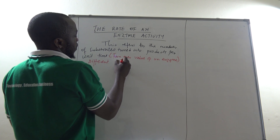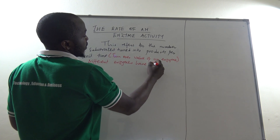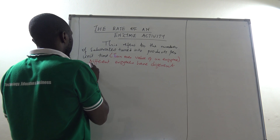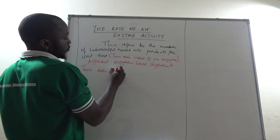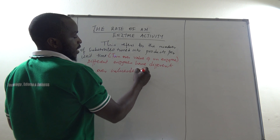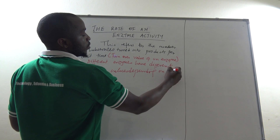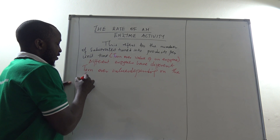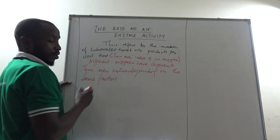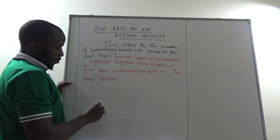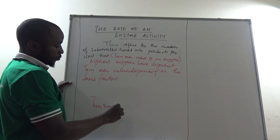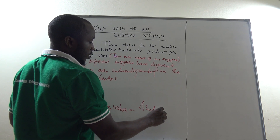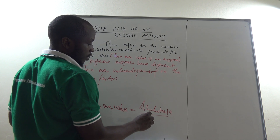Different enzymes have different turnover values, and it is dependent on some factors. So mathematically, you can say turnover value refers to change in the substrate over change in time.